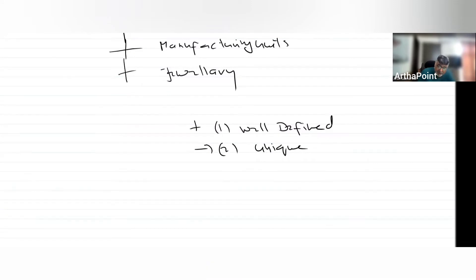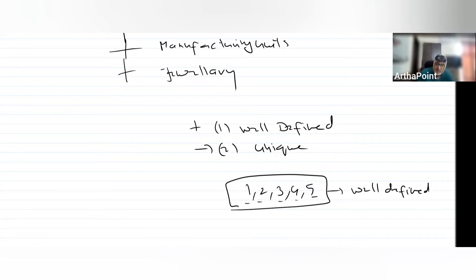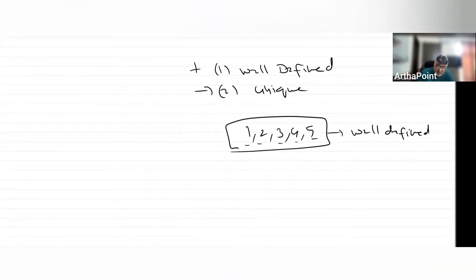Now, if I write these numbers 1, 2, 3, 4, 5 — basically, these are the natural numbers less than or equal to 5. So these are well-defined. We all know these are the natural numbers, right? And every number repeats only once — every number is unique. So we can call this a set of natural numbers less than or equal to 5.